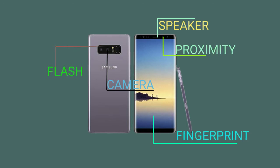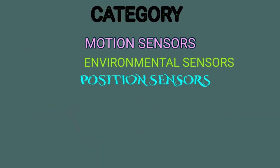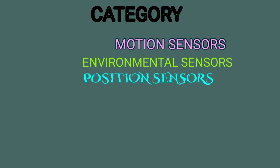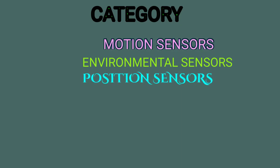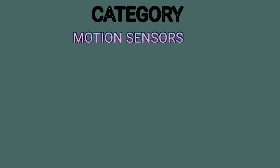Smartphone sensors are classified into three categories: Motion Sensors, Environmental Sensors, and Position Sensors. Let's begin by explaining every single category.